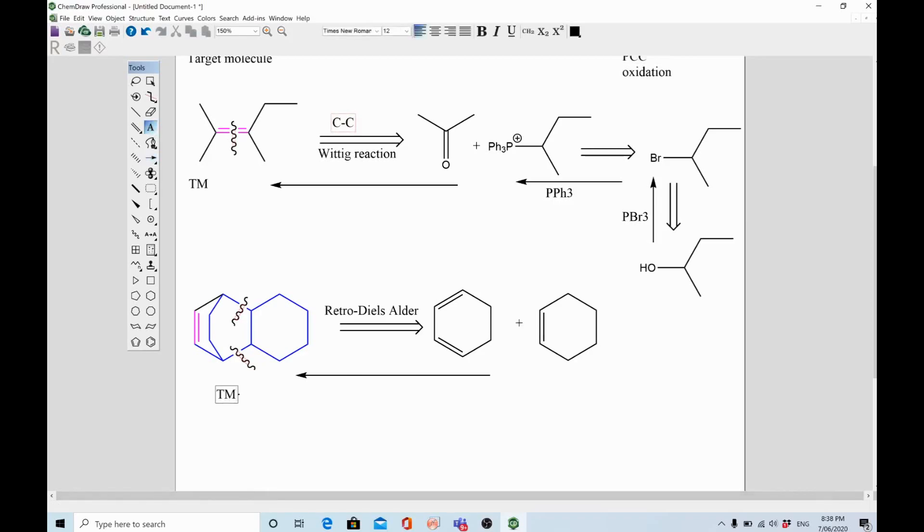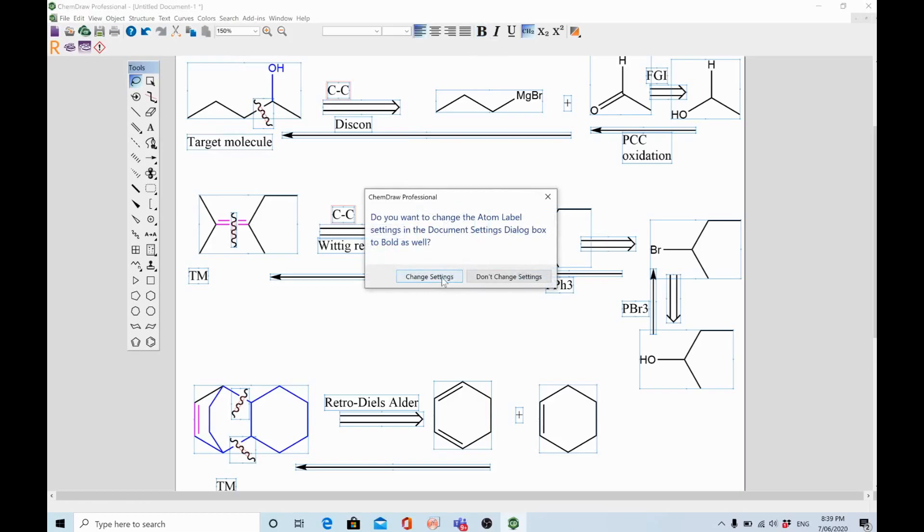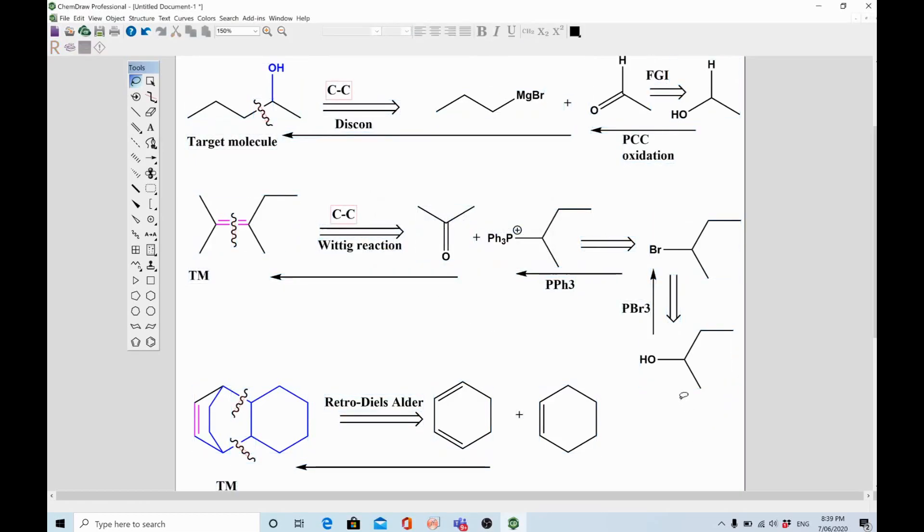All right, quick recap. We did a retrosynthetic analysis of these three compounds - alcohol, alkene, and a cyclic alkene. First we did backward reactions - retrosynthetic where we disconnected and broke these molecules into pieces, smaller compounds. Then we rejoined them using forward reaction arrows. This is it. I hope you liked it, and if you have any questions or feedback on how I can improve things, let me know. Thank you, bye, see you.